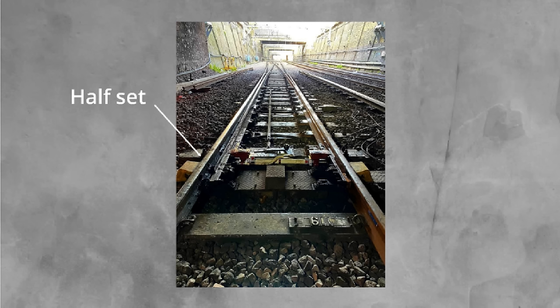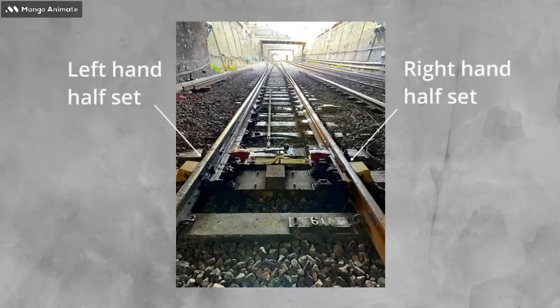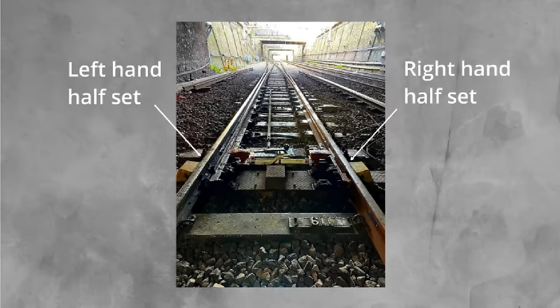When we talk about switches we often refer to left and right hand sides. But how do we know which is which? The answer is to stand at the front of the switches. The half set on your left is the left hand half set. The half set on the right is the right hand half set.